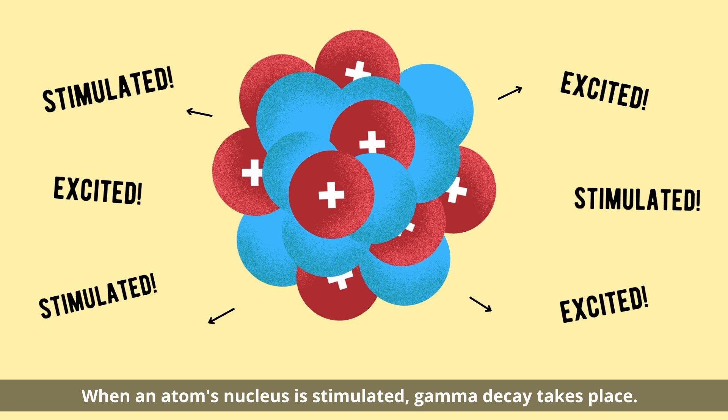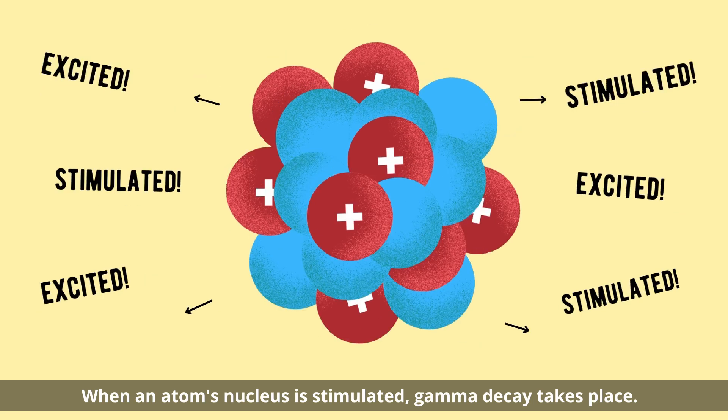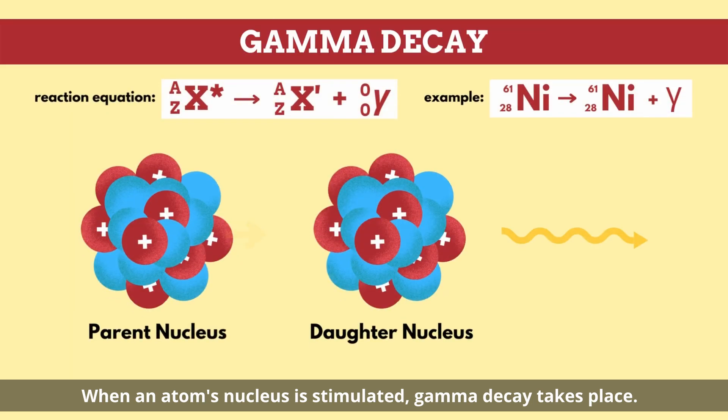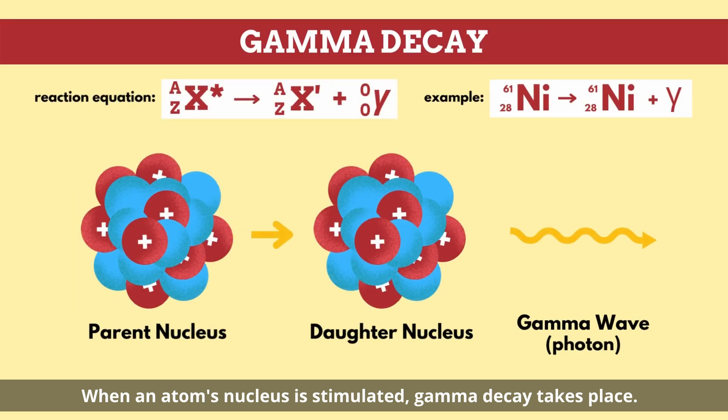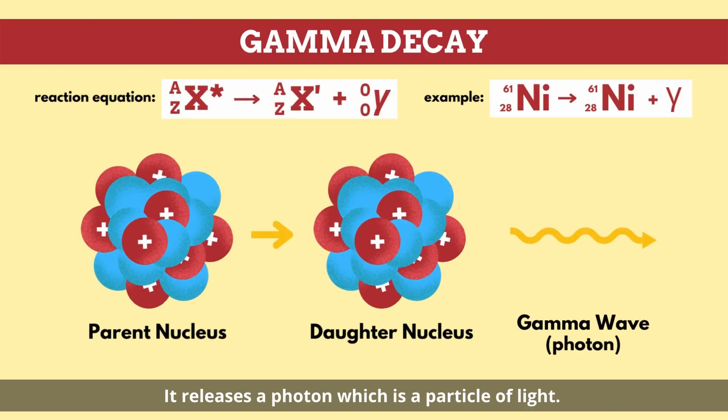When an atom's nucleus is stimulated, gamma decay takes place. It releases a photon, which is a particle of light.